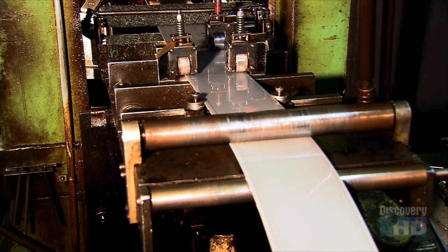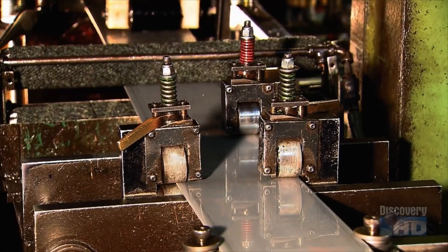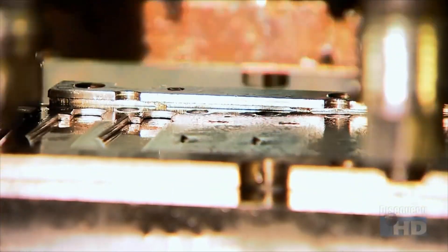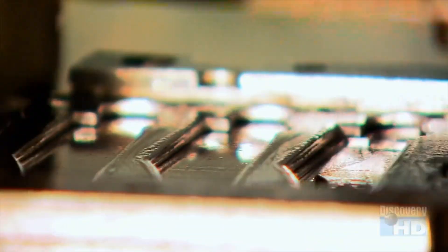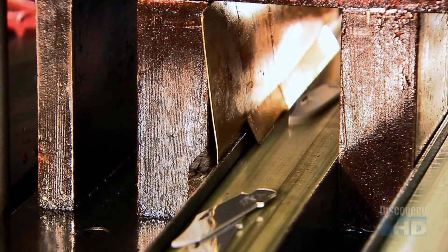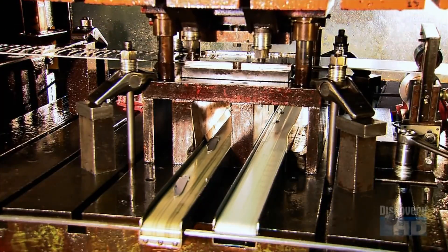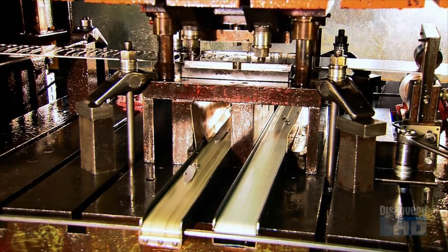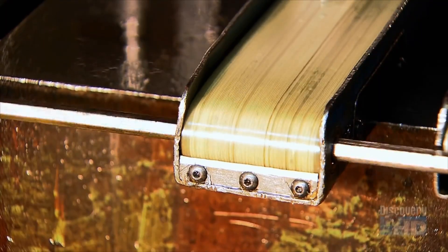To make pocket knives, rollers feed a strip of stainless steel to a series of dies. Like powerful cookie cutters, the dies punch out blade shapes. They cut holes for installing them in the handle, stamp the company logo, and form grooves with which the user can grip the blades.